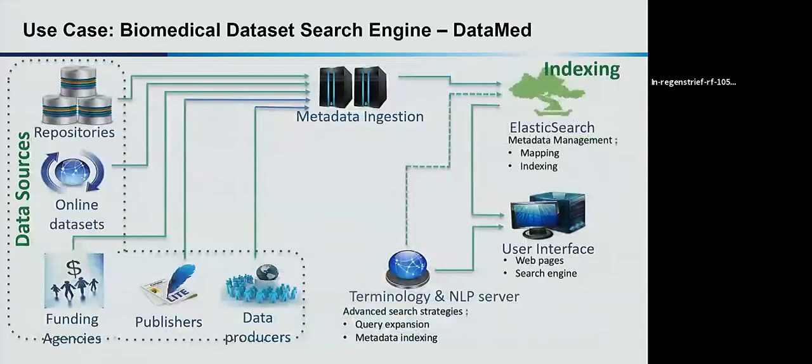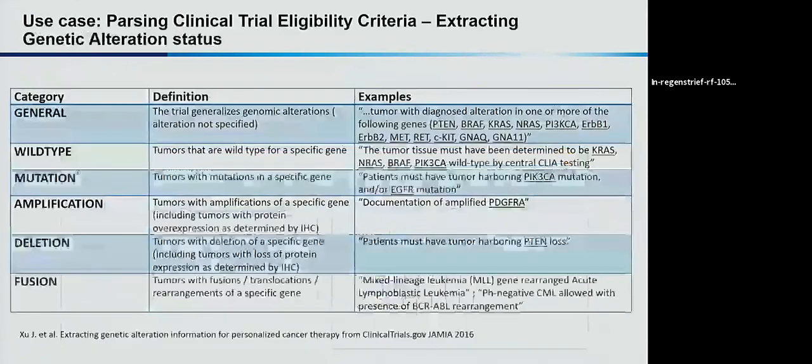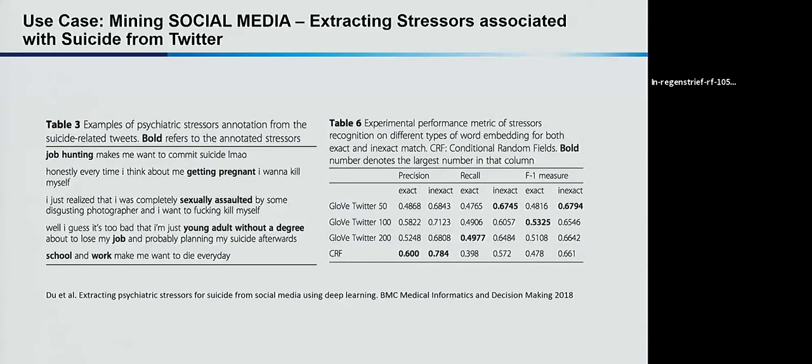We also apply NLP to biomedical data discovery. We have a BD2K project trying to find biomedical datasets. We go to different repositories, find descriptions about datasets, run NLP indexing, build a search engine. That's another use of NLP on ingestion and searching. We're indexing currently about 2.3 million datasets. Other use cases include parsing clinical trial documents for eligibility criteria, matching patients between trials and local patients. We also apply to social media - we did some stress information expression associated with suicides.